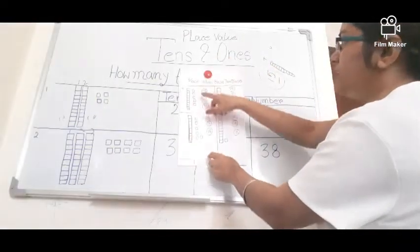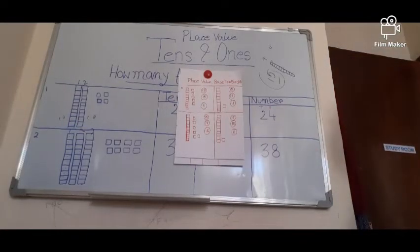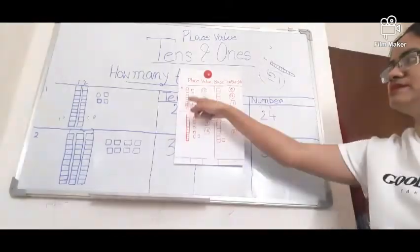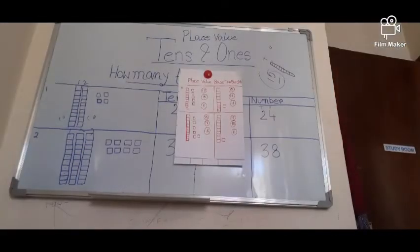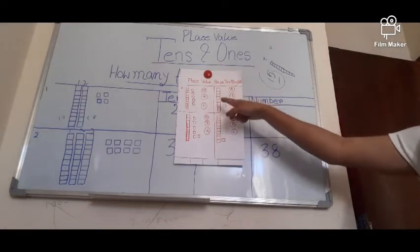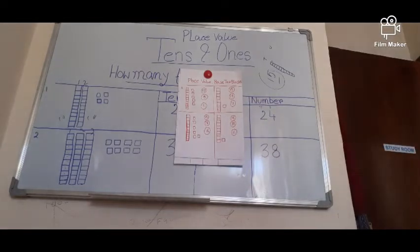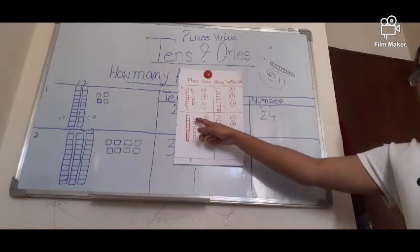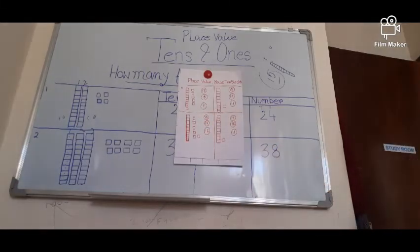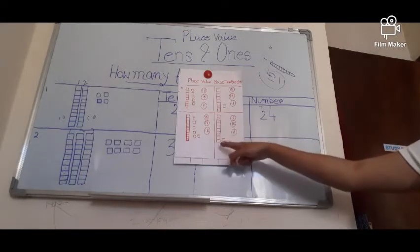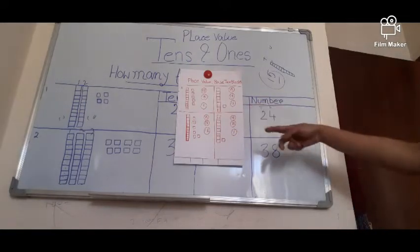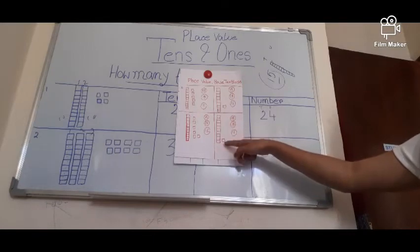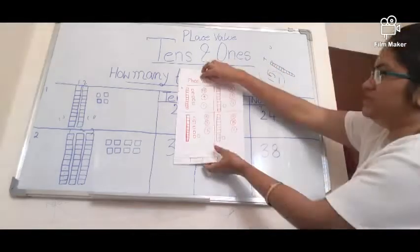Now the second activity: place value using base-10 blocks. I have drawn some blocks. This is one group of 10 blocks and separately 1, 2, 3, 4, 5 — so the number is 15. Next: one group of 10 and 1 separate block — the number is 11. Third: one group of 10 and 6 separate blocks — the number is 16. Last: one group of 10 and 1 separate — that's 11, but if it should be 18 you'd draw 8 separate blocks.